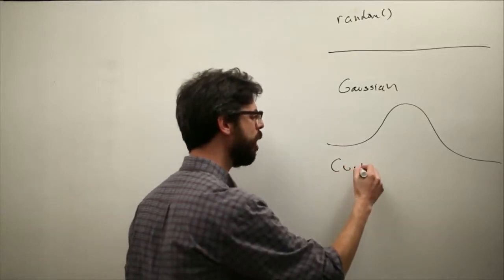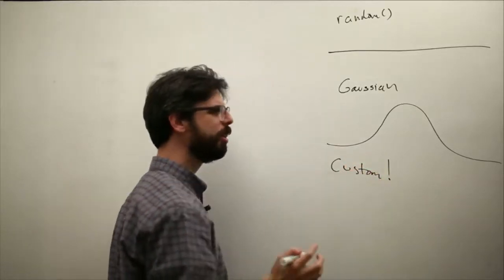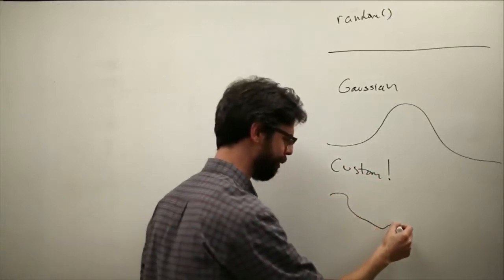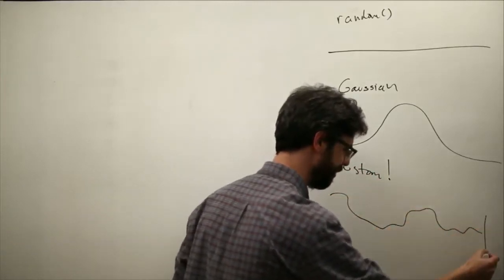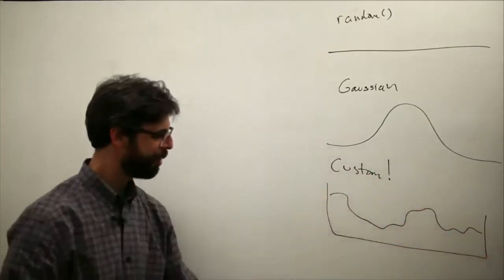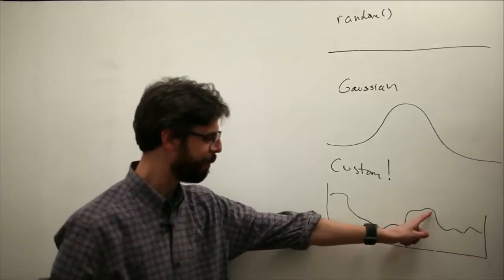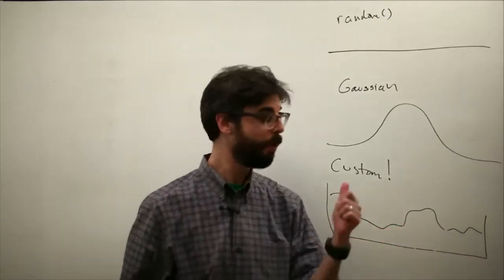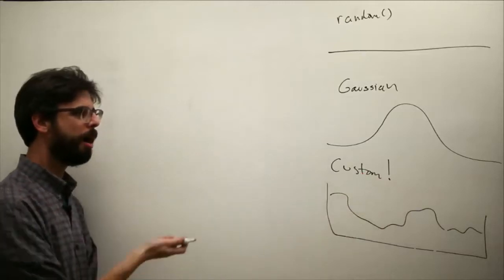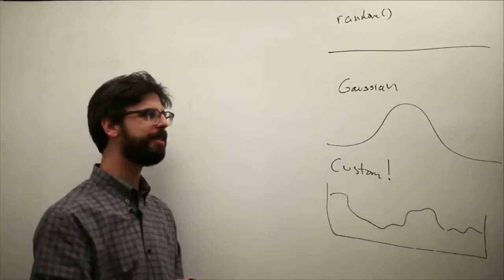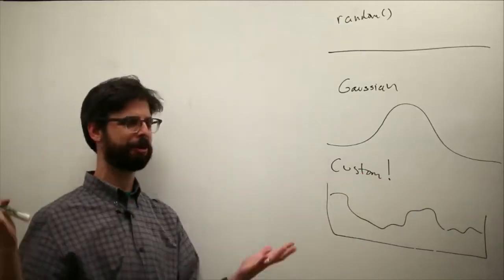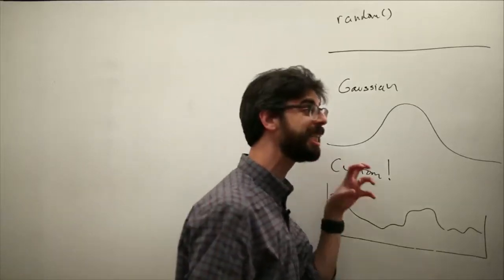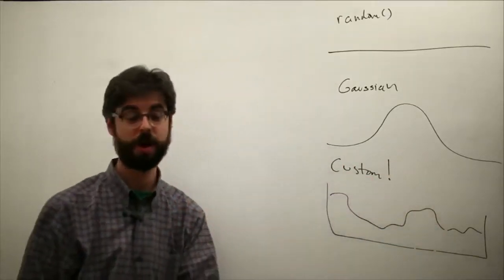But what if we want something totally custom? Like, this random number should be picked a lot, this one not so often, this one really not so often, this one a lot as well, this one a medium amount. What if we want something custom like this? This may seem like an abstract discussion of probabilities and random numbers, but it's really going to be relevant to a lot of the simulations we're going to do.